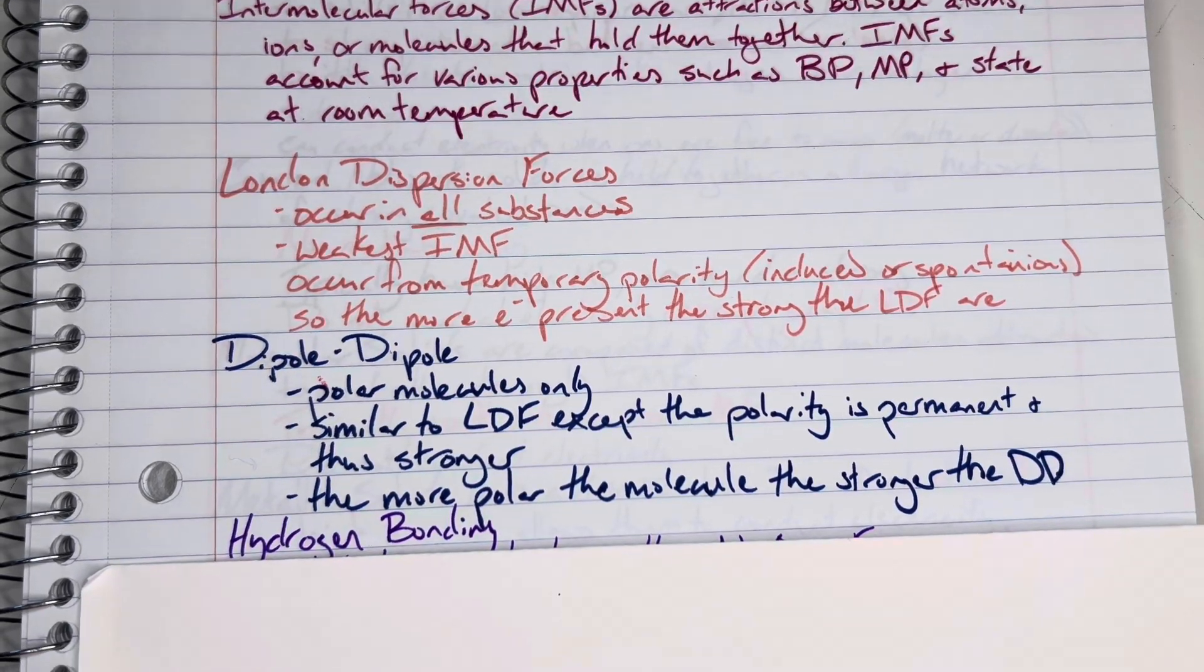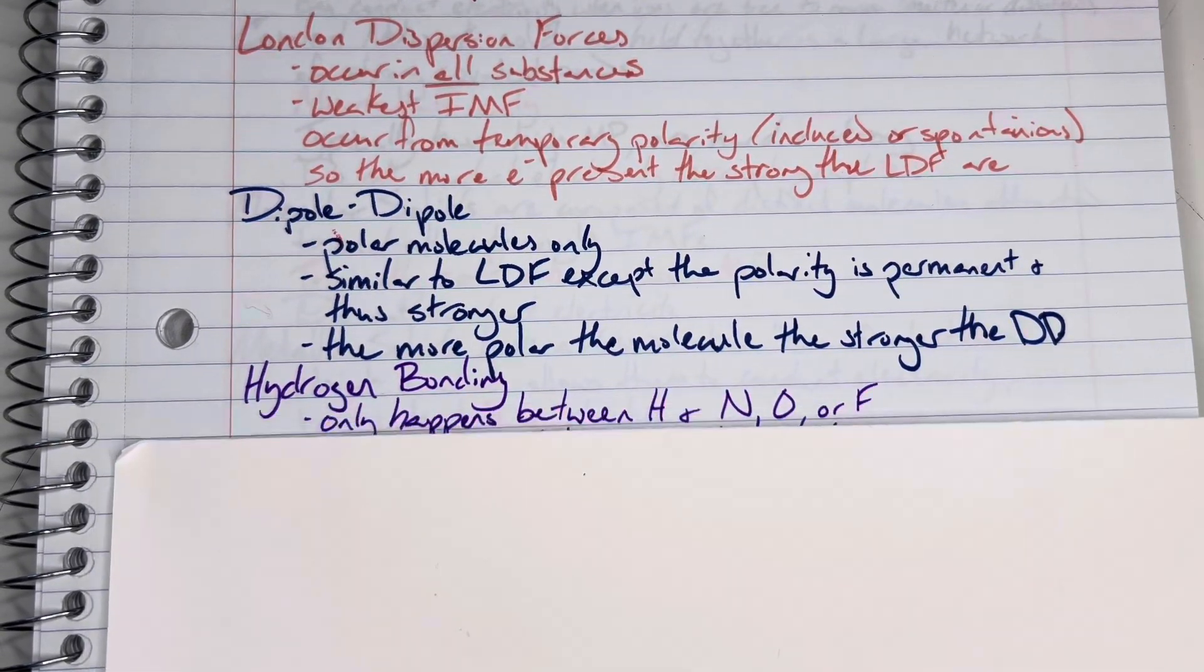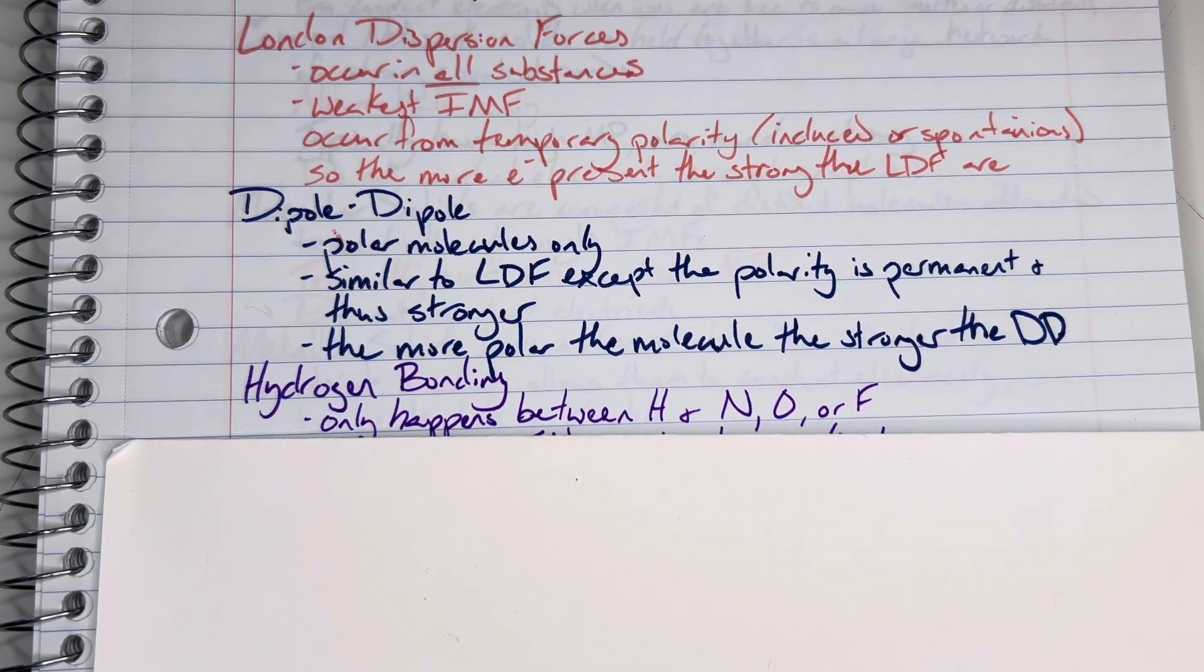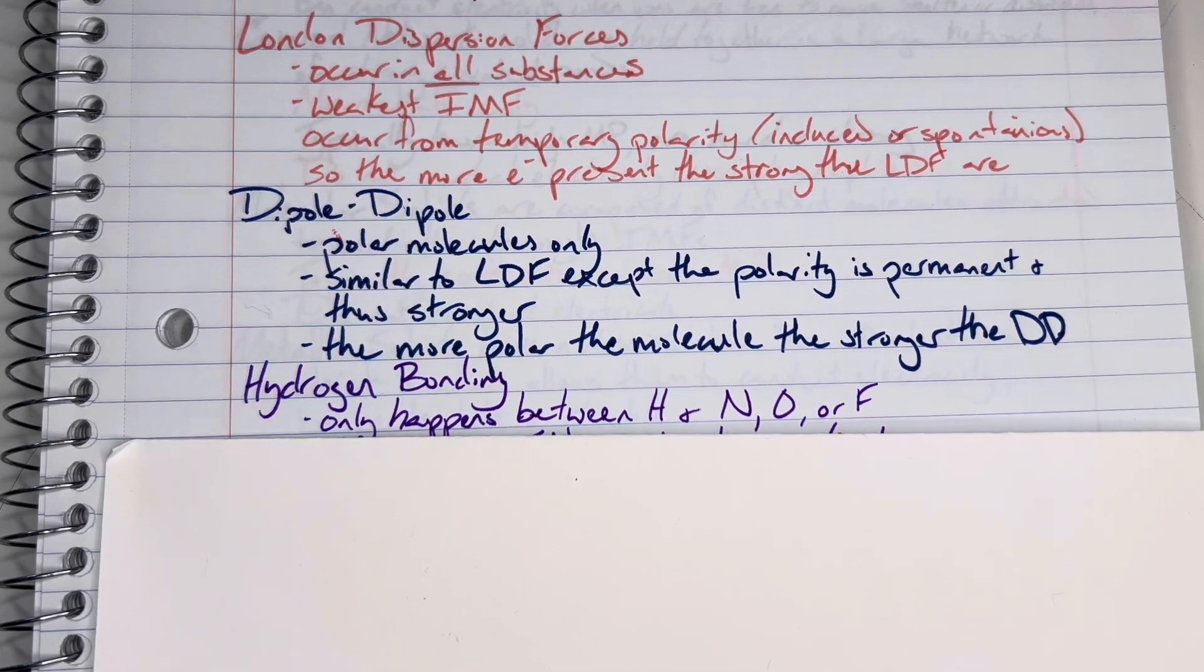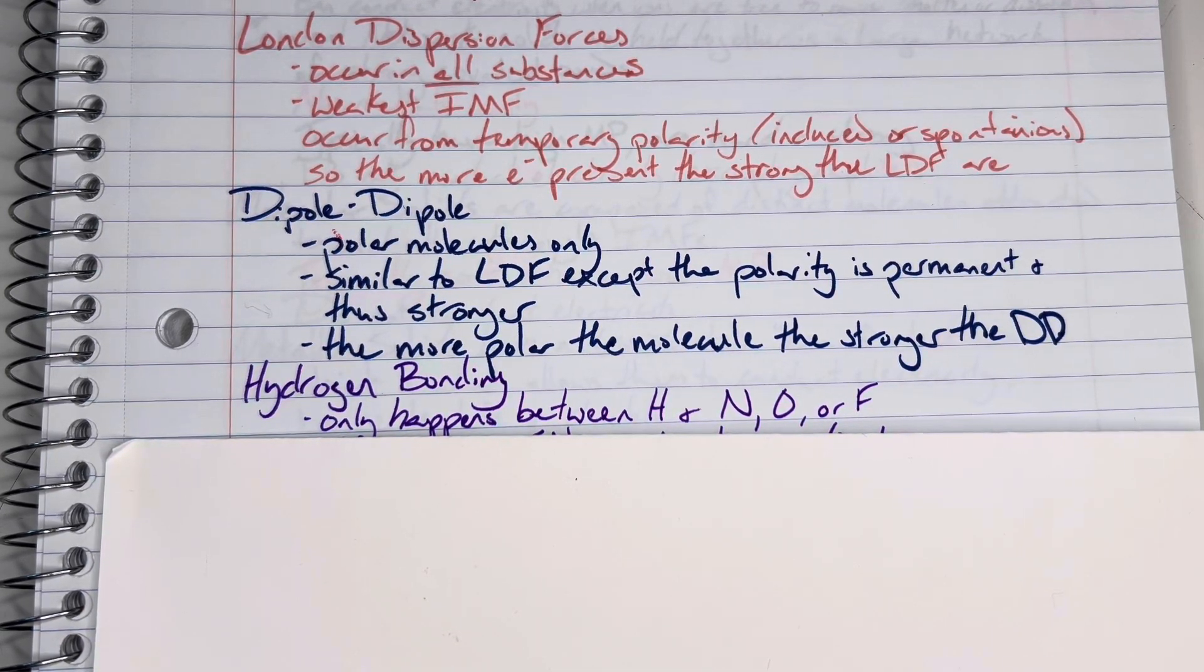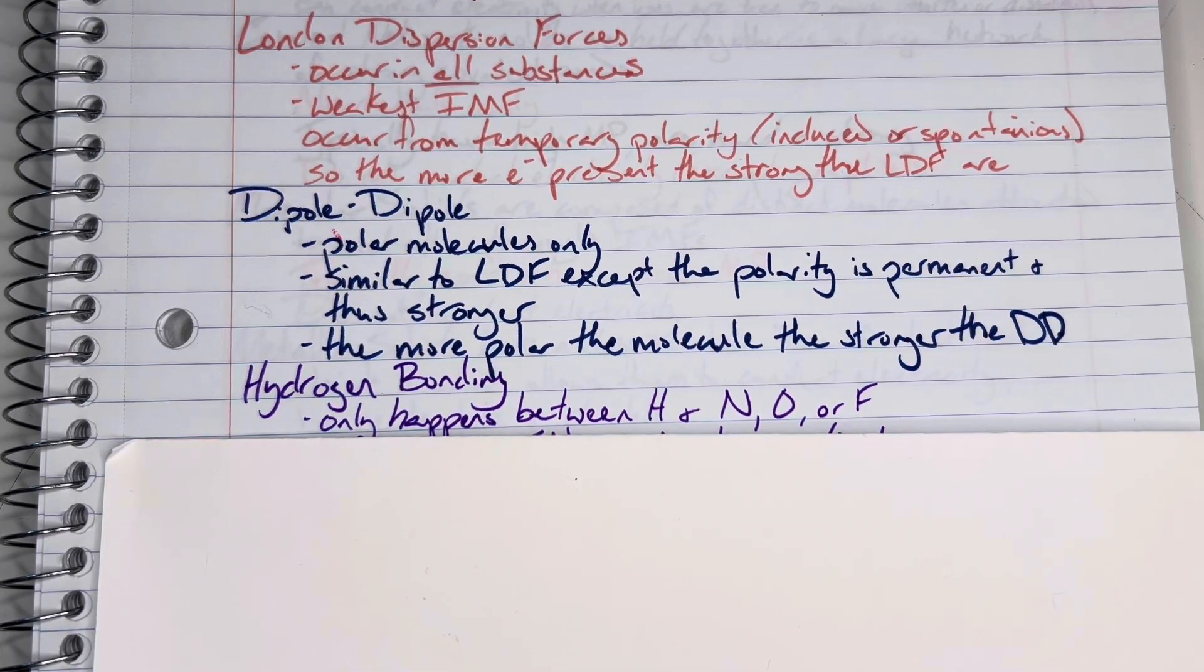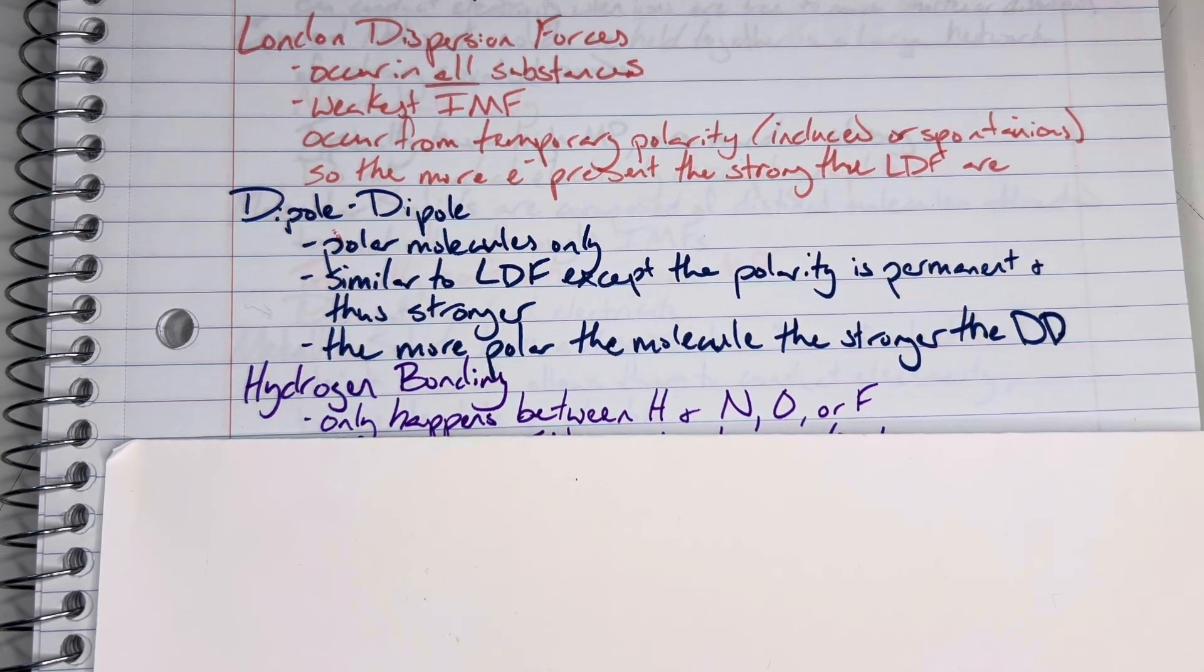Next up is hydrogen bonding. Hydrogen bonding only happens if you have a molecule that has hydrogen present. Hydrogen is required, but hydrogen can only hydrogen bond to nitrogen, oxygen, or fluorine. Some of the ways that I have seen people memorize that hydrogen bonds are only between hydrogen and nitrogen, oxygen, or fluorine. The way that my college professor taught this to me was saying hydrogen bonding, nof, nof, nof.